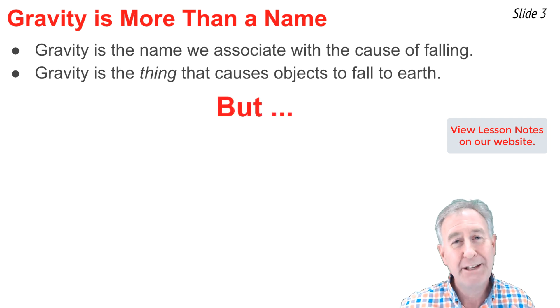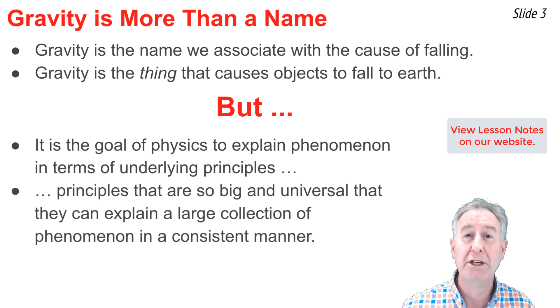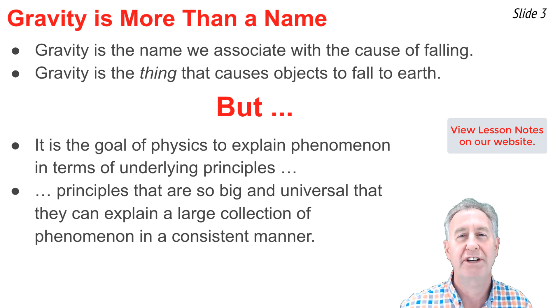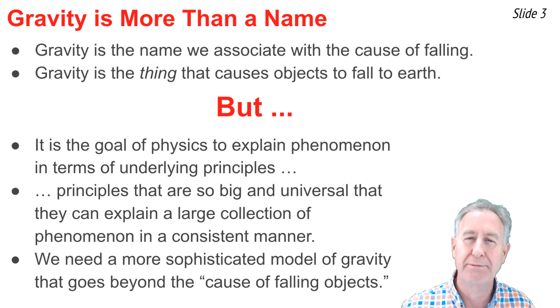But in physics, we have to explain phenomena in terms of their underlying principles. And those principles that we use must be big enough and universal enough to explain a large collection of phenomena in a very consistent manner. What we need is a more sophisticated model of gravity than what goes up must fall back down to earth. We need a model of gravity that is universal and large. And in this video, and the two that follow, that's what we'll attempt to build.